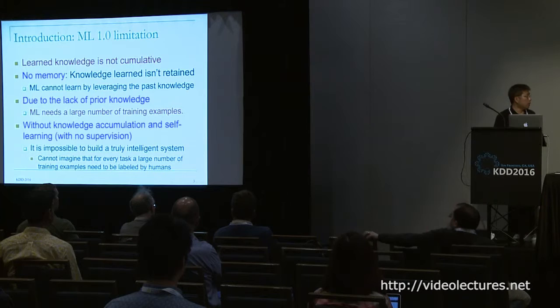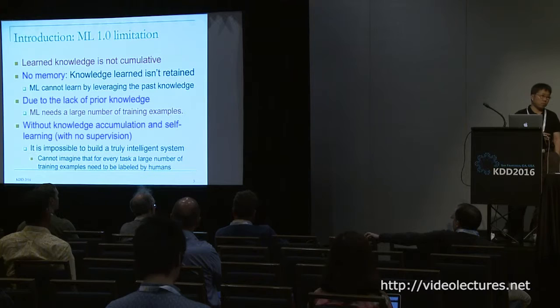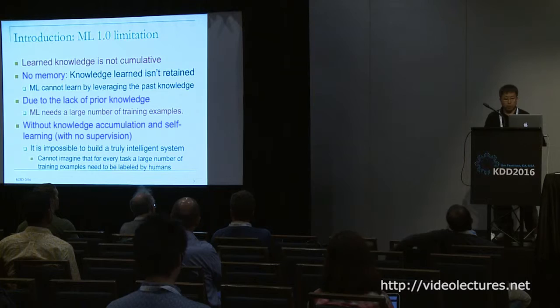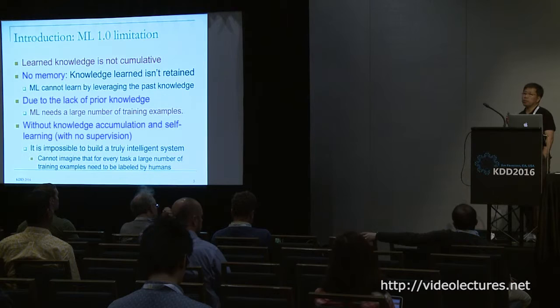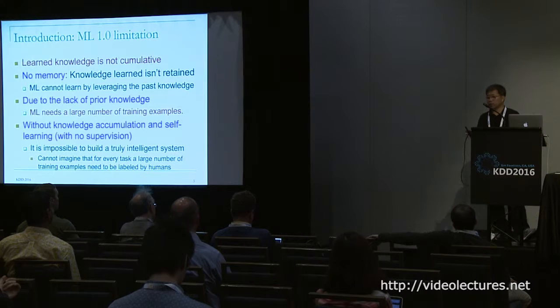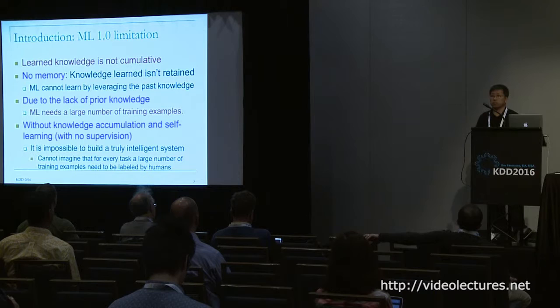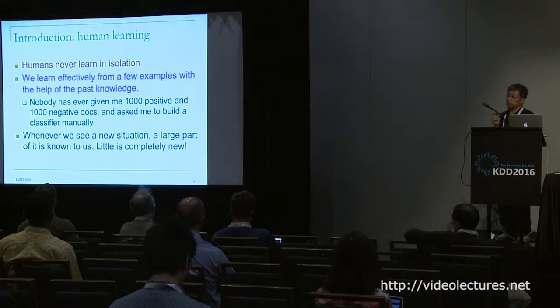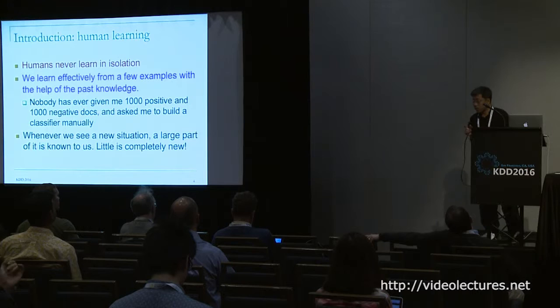Human beings accumulate knowledge from the past, which machines are not able to do at this moment. Without the ability to self-learn and accumulate knowledge, it's impossible to build a truly intelligent system. For every task in the world, somebody has to label the data and build a model — that's basically impossible given how many things there are. Human beings never learn in isolation; we're very effective at learning with very few examples because we already have knowledge. If you don't understand Arabic, for example, you can't learn from a few Arabic documents — but you might learn from a few English ones.